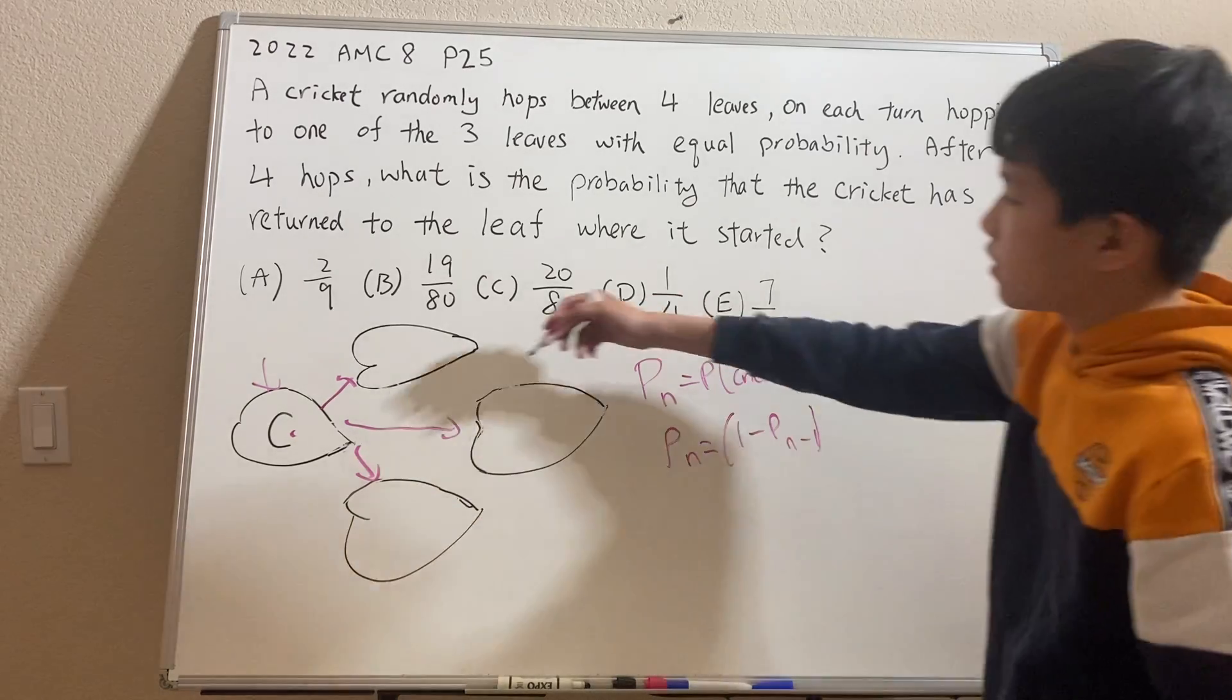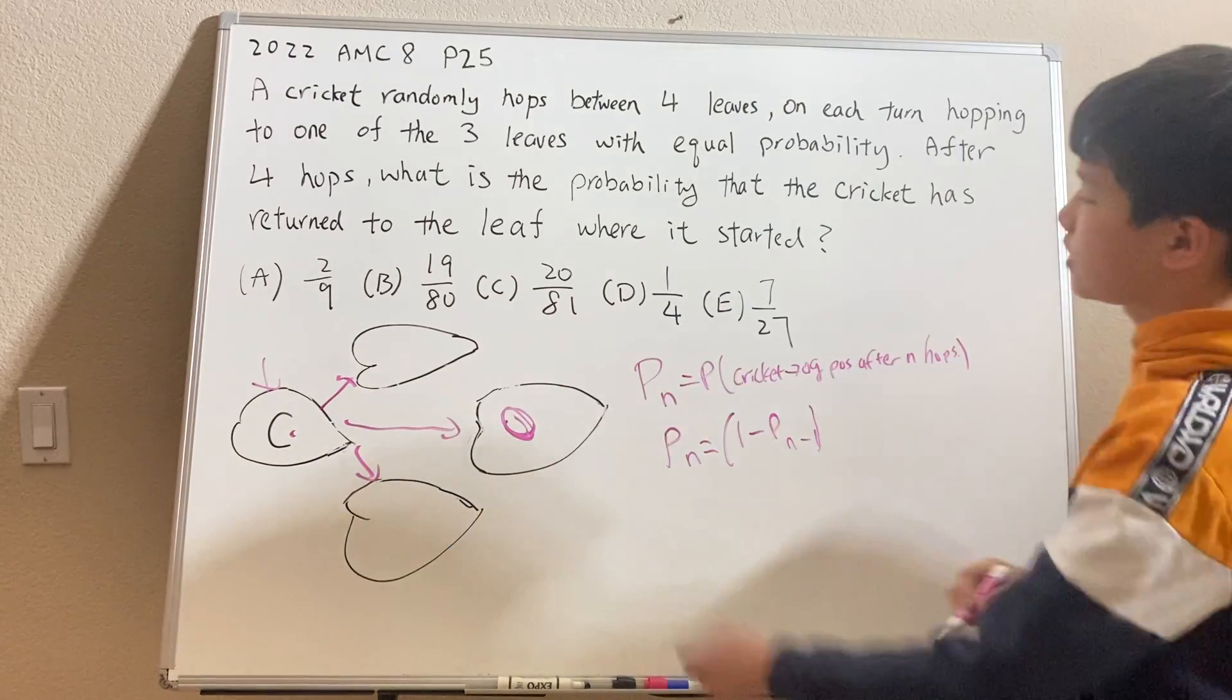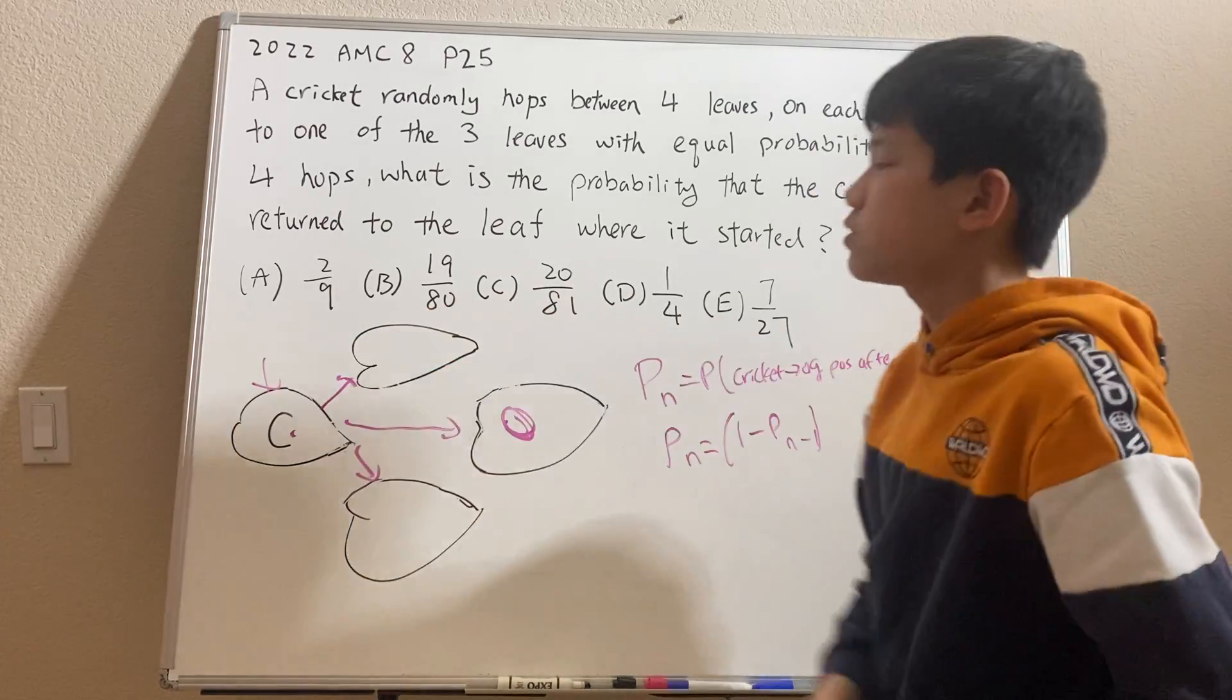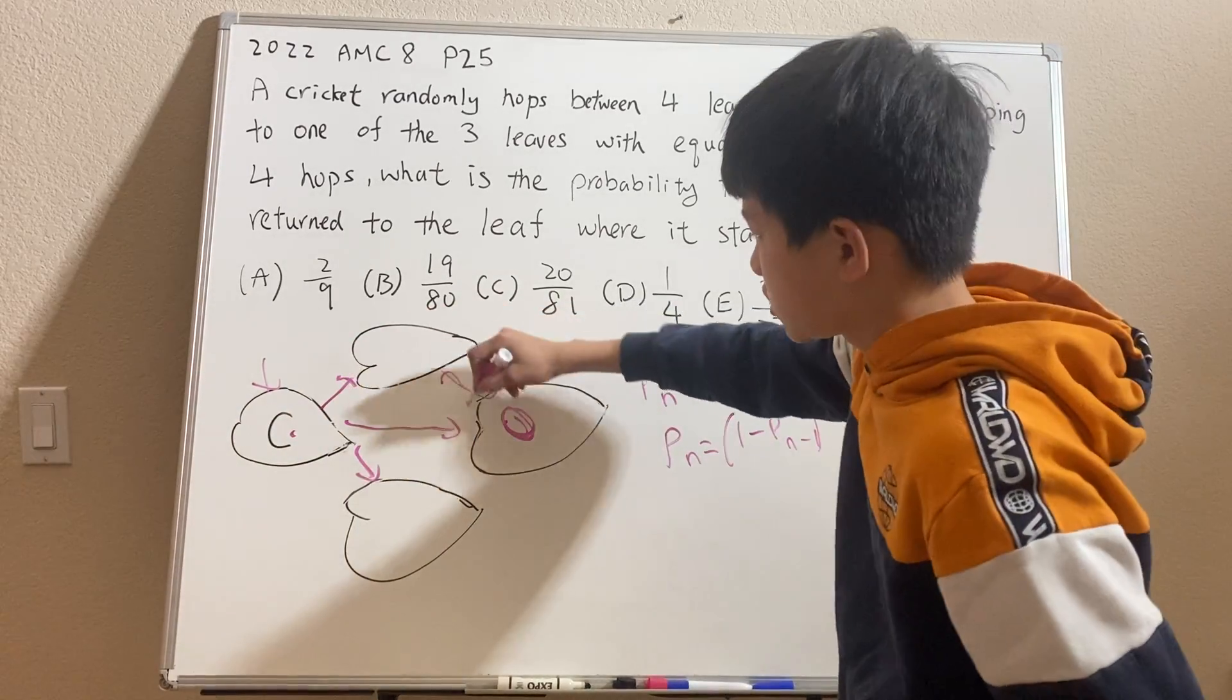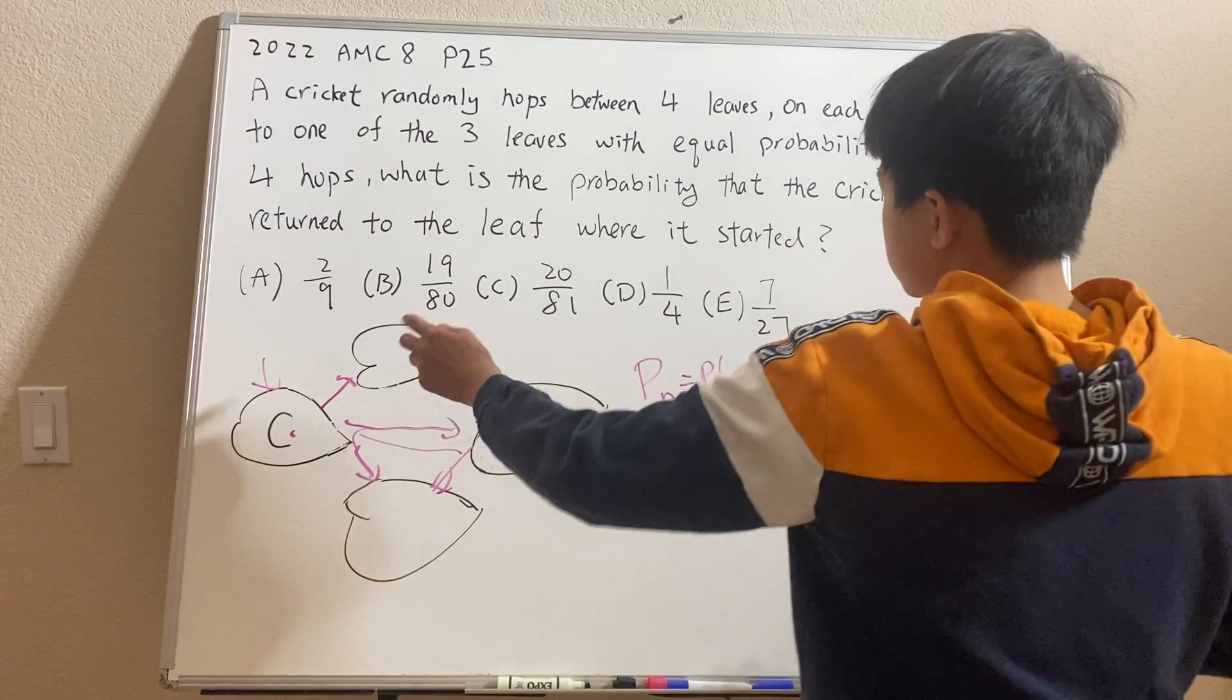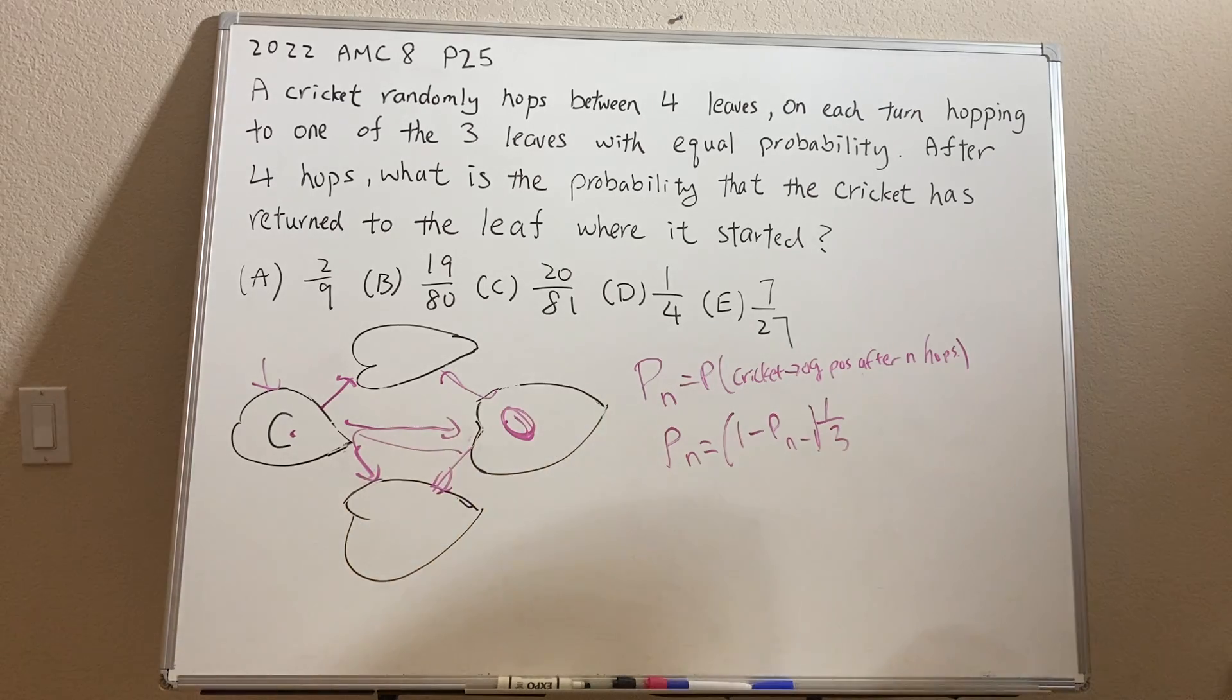So after that, let's say it goes here, let's say the cricket is here after n-1 hops, the probability it returns to the original position. Well, there's three possible leaves to go on, there's one third chance that it goes to the original. So this is a recursion.